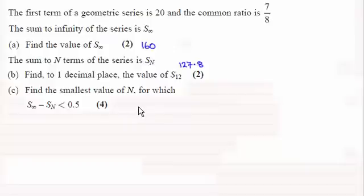We've got to work out the smallest value of n for which the sum to infinity minus the sum of the first n terms is less than 0.5. So I'm going to start by saying if S∞ minus Sn is less than 0.5, then what can we build on from this?